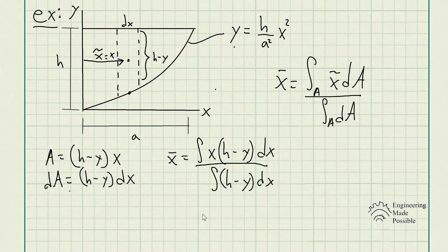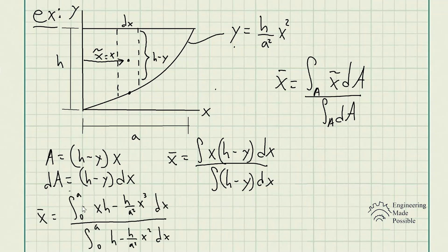So now let's go ahead and plug in for y and simplify the integrals here. So we have the integral from 0 to a, and after distributing the x and plugging in for y, we have x times h take away h divided by a squared times x cubed dx, and the denominator here is the integral from 0 to a, h take away h divided by a squared times x squared dx.